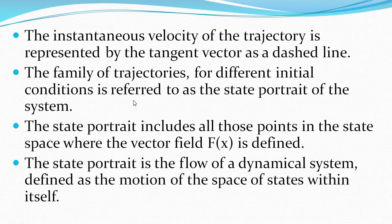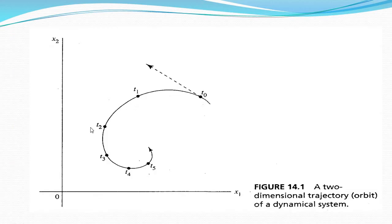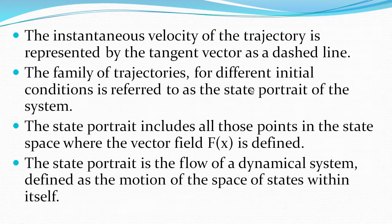Different time observations are plotted along the trajectory. The instantaneous velocity of the trajectory is represented as a tangent vector, shown as a dashed line on the diagram.